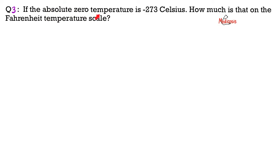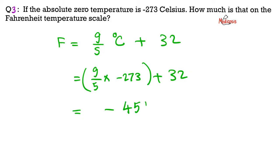Question 3. If absolute zero temperature is negative 273 degrees Celsius, how much is that on the Fahrenheit scale? Please pause. Same thing. Fahrenheit equals 9 over 5 multiplied by degrees Celsius plus 32, which equals 9 over 5 multiplied by negative 273. And then you add to that 32, which will give me an answer of negative 459.4 degrees Fahrenheit.